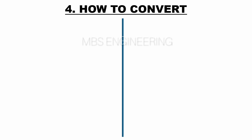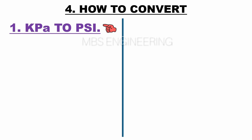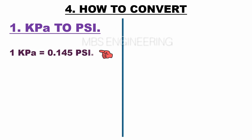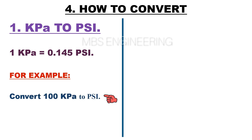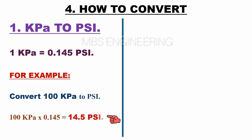Next, we will learn the fourth topic: how to convert kilopascal to PSI. Please remember that 1 kilopascal is equal to 0.145 PSI. Sample example: convert 100 kilopascal to PSI. 100 kilopascal multiplied by 0.145 — therefore the obtained pressure value is 14.5 PSI.